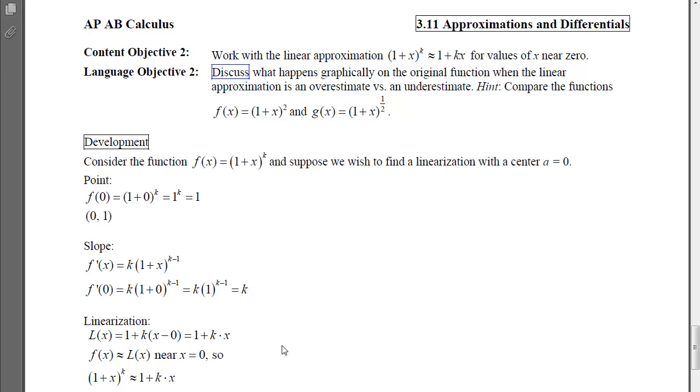If we simplify that, we get 1 + kx, and we'll see that f(x), which is the outputs on the function, can be approximated by the outputs on the line as long as we're close to that point of tangency at x = 0. So that means the output on f, which is (1+x)^k, is going to approximately be the output on the line, which is 1 + kx.